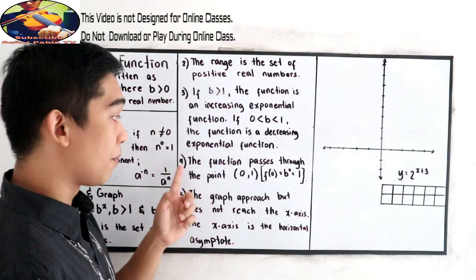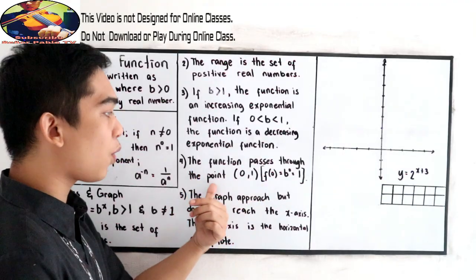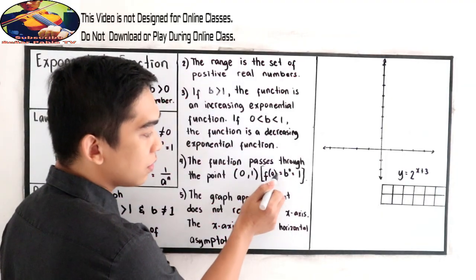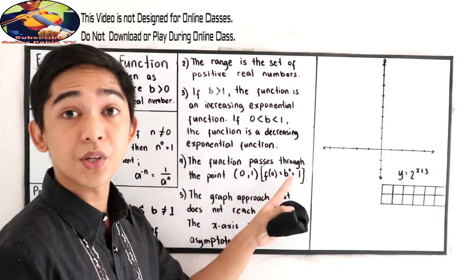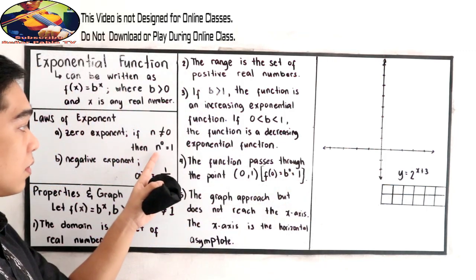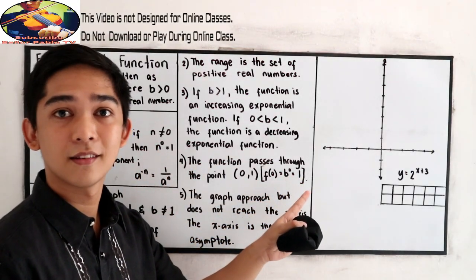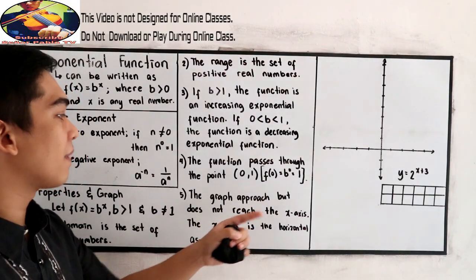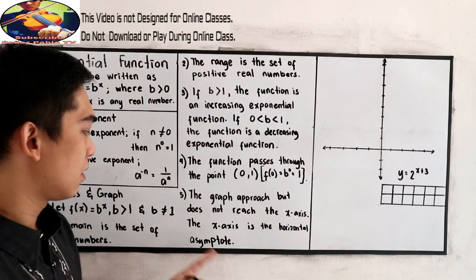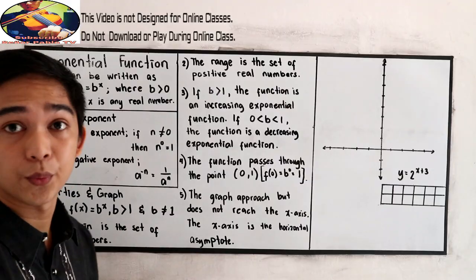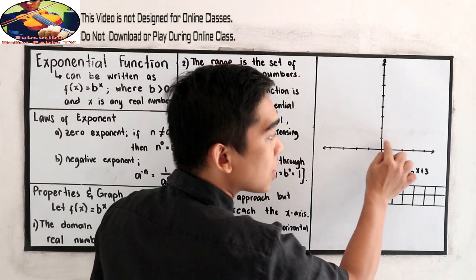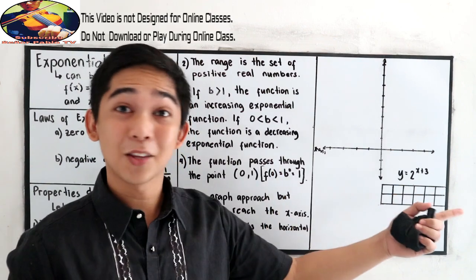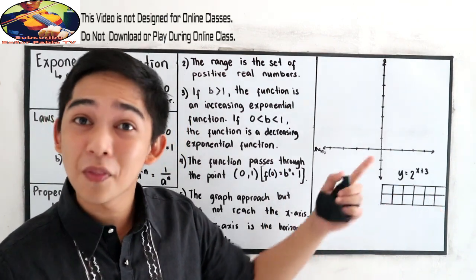The function passes through the point (0, 1). Why? Because f(0) = b raised to 0, and any non-zero value raised to zero equals one. Our last property: the graph approaches but never reaches the x-axis. The x-axis is the horizontal asymptote — the graph goes closer and closer to the x-axis but will never touch it.